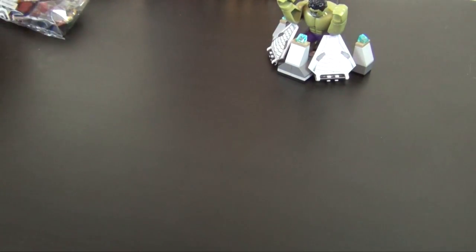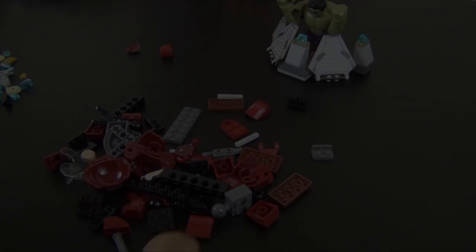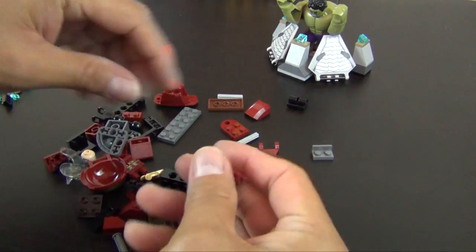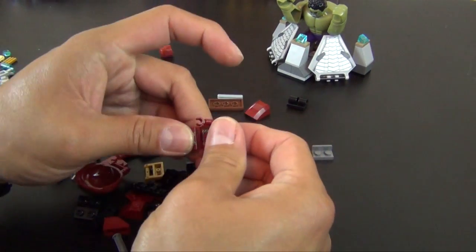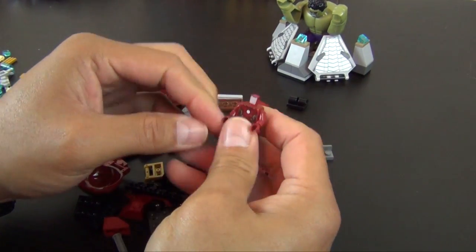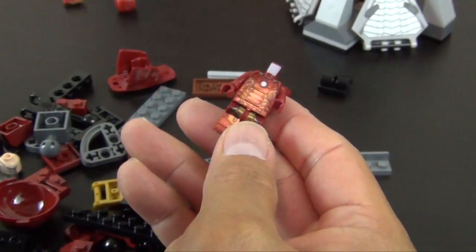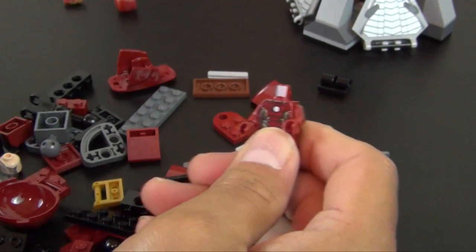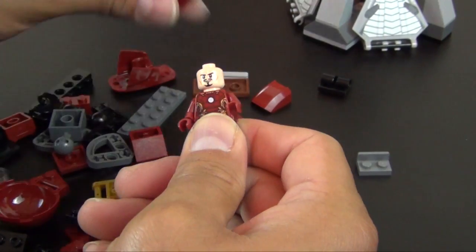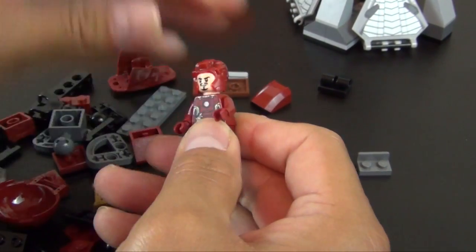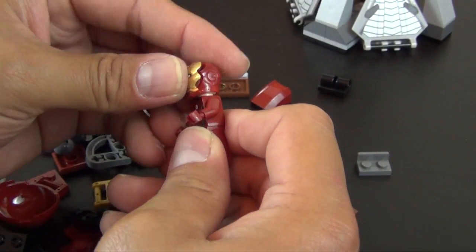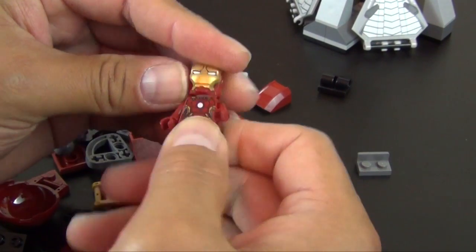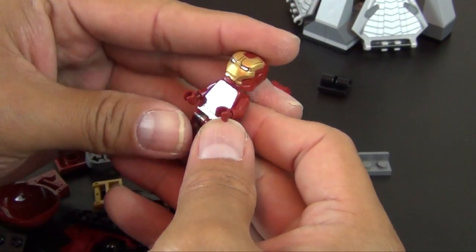Okay, that completes the small bag number one. So let's move this to the side and we will do bag number two. Bag number two begins the build of Iron Man Mark 43, not 42.